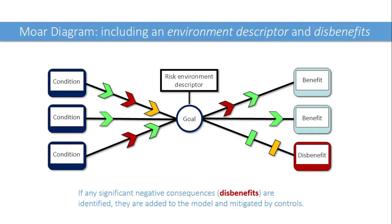We can slightly improve the diagram by adding a couple more elements. At the top of the diagram there is a 'Risk Environment Descriptor'. This is a convention — I'm trying to keep my diagrams as close as possible to the design used in the bowtie method, primarily in safety engineering. I call this the Risk Environment Descriptor. It's almost like a title or a label for your diagram. Your risk environment might be something like European Sales and Marketing, Research and Development, or Mergers and Acquisitions — the broad area of your organisation's activities that the diagram fits within.